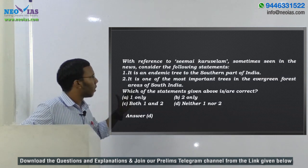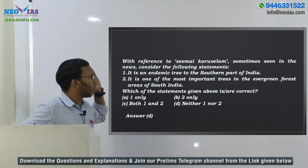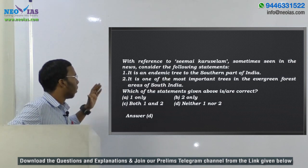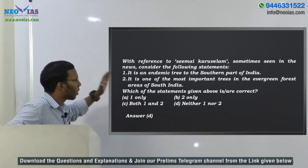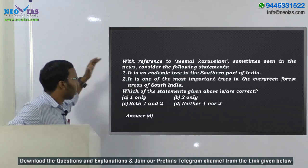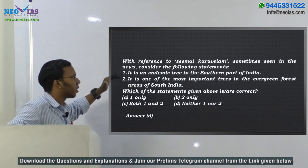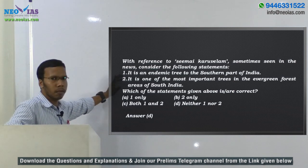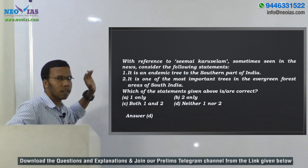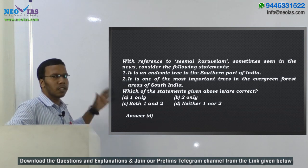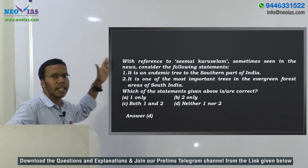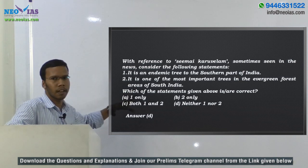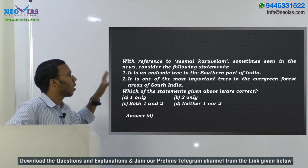In our model test, we discussed Prosopis juliflora with statements saying it is an endemic tree to southern India and one of the most important trees in riparian forest areas of South India — both of these statements are wrong. It is not endemic but rather an invasive species to India, and it is not a beneficial tree in riparian forests.